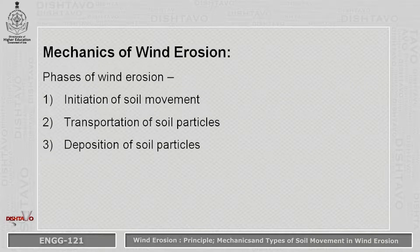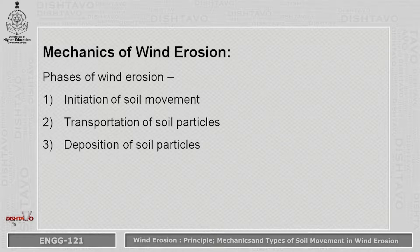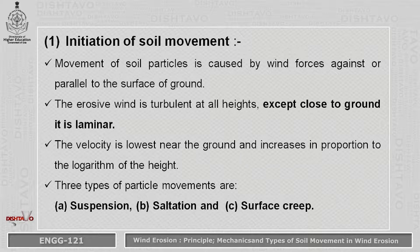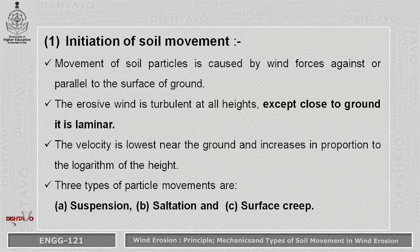Second, mechanics of wind erosion. The mechanics of wind erosion is explained using three phases: first is the initiation phase, second is the transportation of soil particles, and third is the deposition of soil particles. The initiation of soil movement is further divided into three types: suspension, saltation and surface creep. The erosive wind is turbulent at all heights, except close to the ground where it is laminar. As we approach the ground surface, wind velocity decreases, and as height from the ground increases, velocity increases.